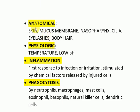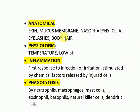The first is anatomical barriers: skin, mucous membrane, mesothelium, cilia, eyelashes, and body hair. The second is physiologic barriers: temperature and low pH. Third is inflammation, which is the first response to infection or irritation, stimulated by chemical factors released by injured cells. Fourth is phagocytosis by neutrophils, macrophages, mast cells, eosinophils, basophils, natural killer cells, and dendritic cells. These are the barriers for innate immunity.